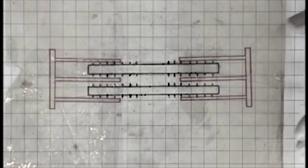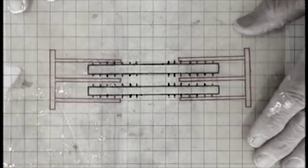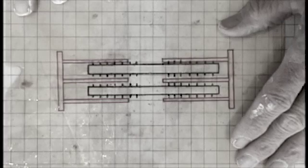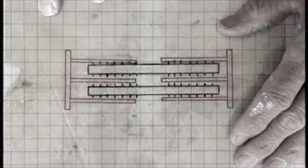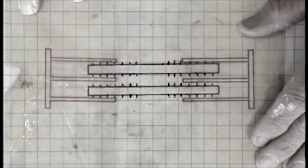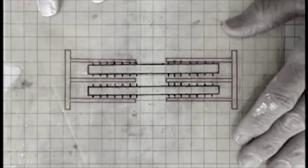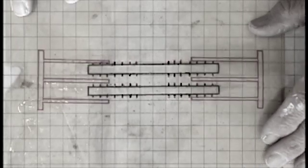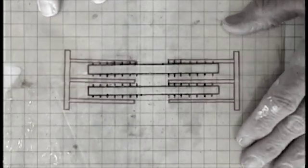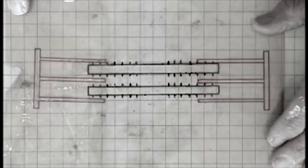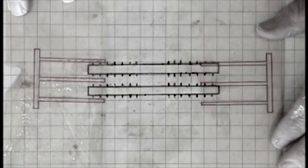And here's the way the muscle contracts: binding of cross bridges, sliding of thick and thin filaments, release of cross bridge — which is relaxation — elongation. Contraction, relaxation, elongation. That's muscle contraction.